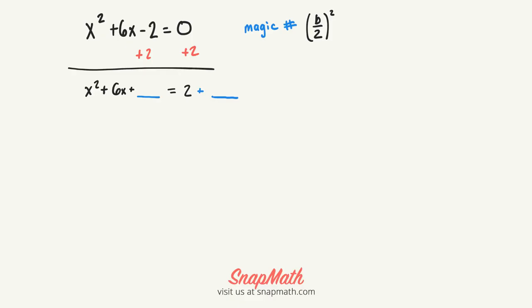So our magic number is this. It's the b value, which in this problem is 6. So it's 6, and we plug in here 6 over 2 squared.